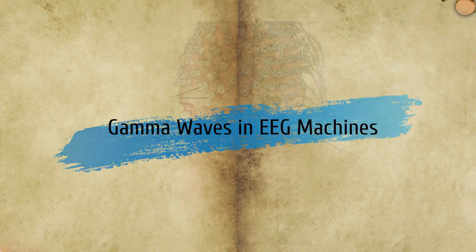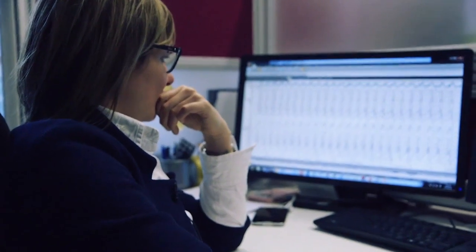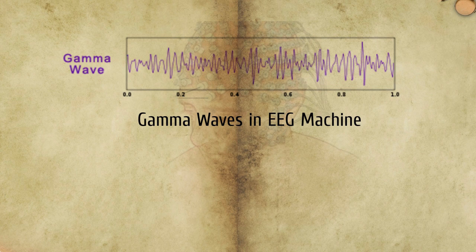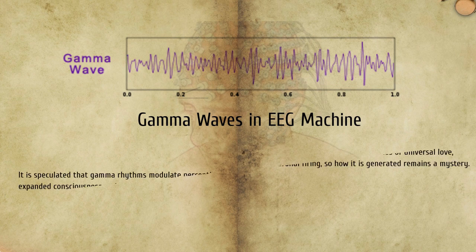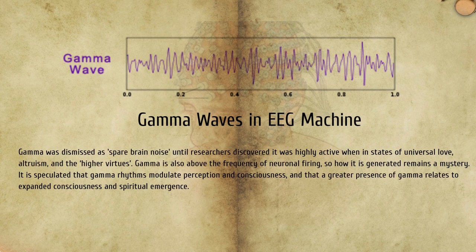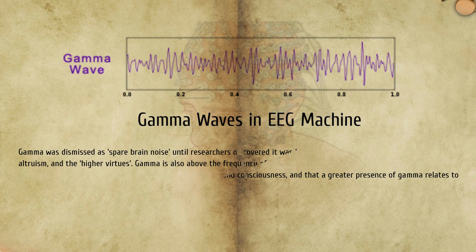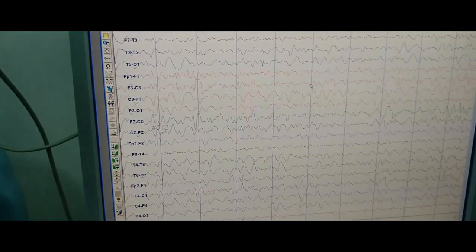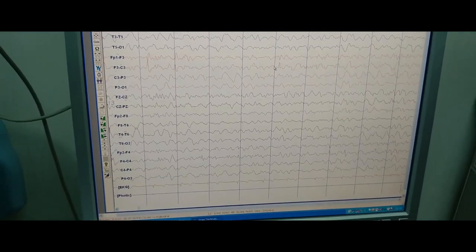Last but not least, gamma waves. Gamma brainwaves are the fastest of brainwaves — high frequency, like a flute — and relate to simultaneous processing of information from different brain areas. Gamma brainwaves pass information rapidly and quietly. As the most subtle of brainwave frequencies, the mind has to be quiet to access gamma.